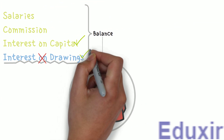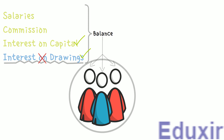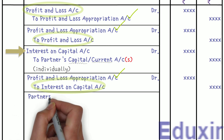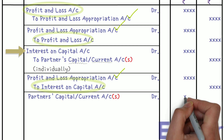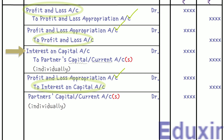Let us now see how interest on drawings is handled. When partners make drawings, interest on drawings is not collected in cash immediately; rather, it is charged to the partners' capital accounts, reducing their capital. The rule is to debit the partner's capital or current account — current account under the fixed capital method, capital account under the fluctuating capital method. At the same time, interest on drawings is an indirect revenue, so the interest on drawings account is credited.